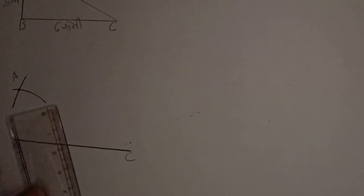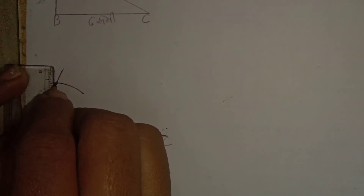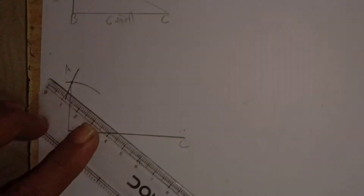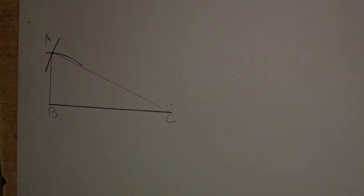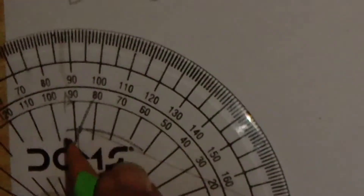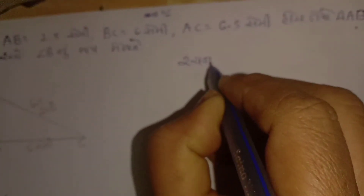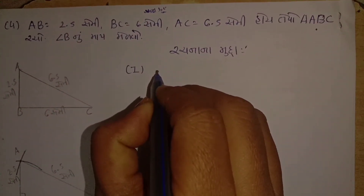હવે રેખાખંડ AB અને રેખાખંડ AC જોડી દઈએ. ત્યાર બાદ A થી AC રેખાખંડ જોડી દઈએ. આપણે કોણ B ને માપવાનું છે, તો કોણ માપક ની મદદ થી B ખૂણો માપીએ. ત્યાં 90 ડિગ્રી નો એંગલ જોઈ શકો છો.